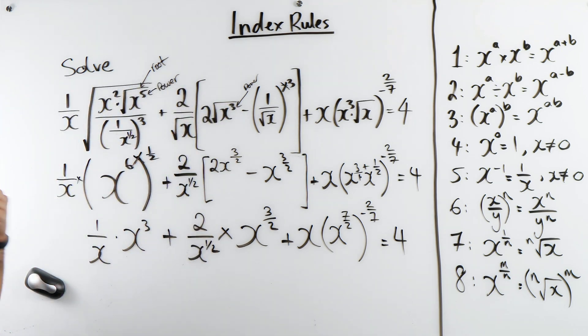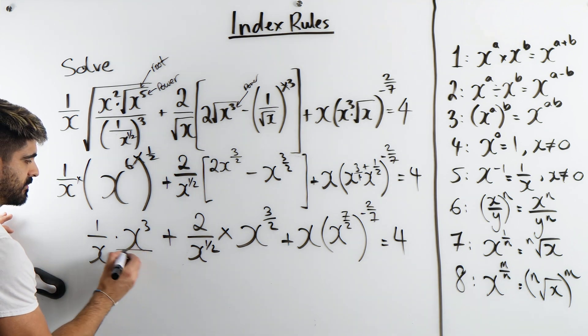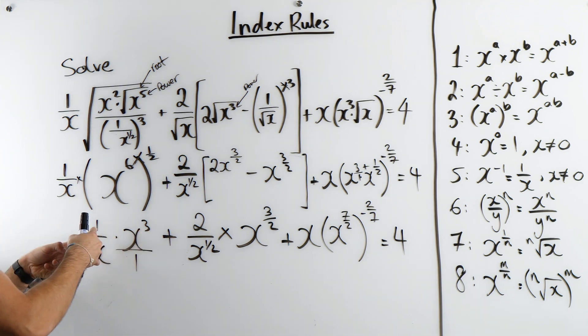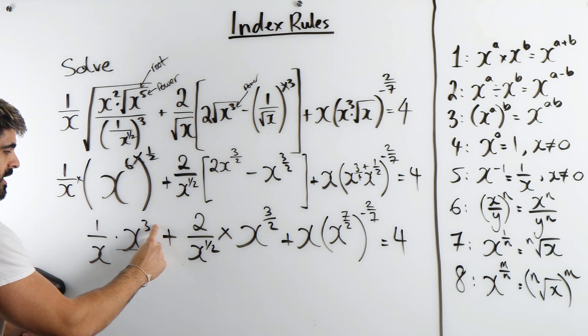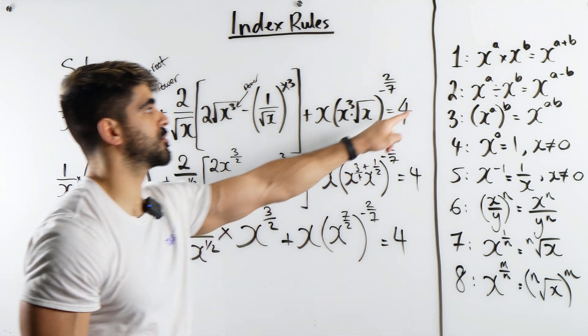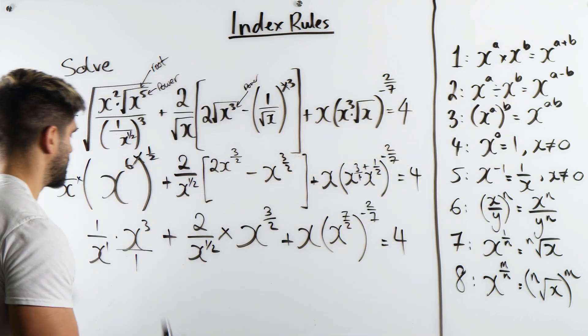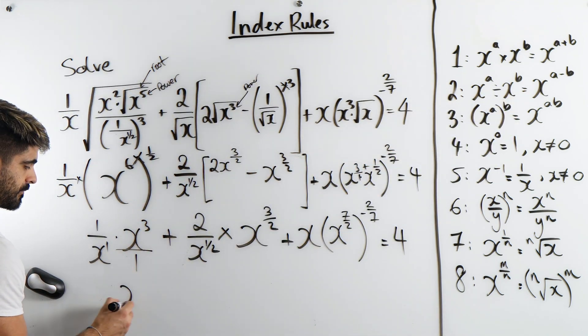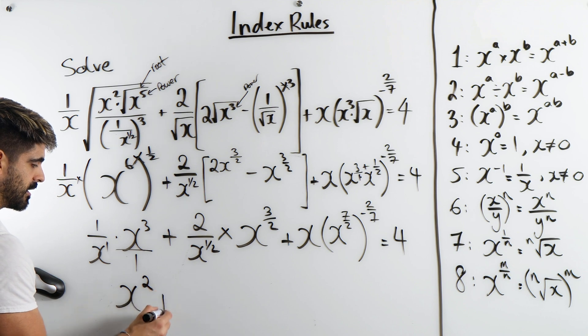Going back to this. We have 1 over x times x cubed. So you can think of that as over 1. They join to make one fraction. You're doing x cubed divided by x. Here we are using rule 2. We're dividing. We're going to subtract those powers. 3 minus 1 is 2.